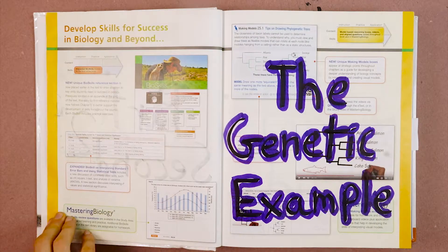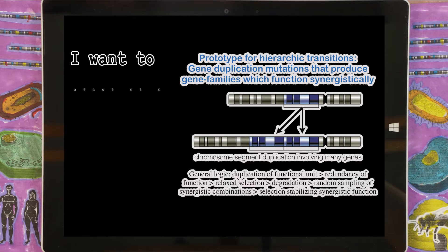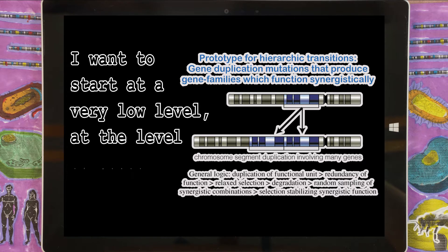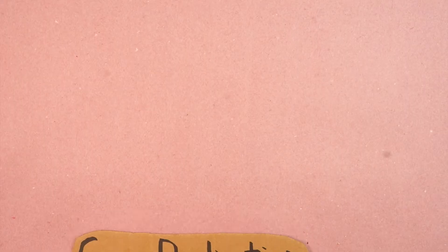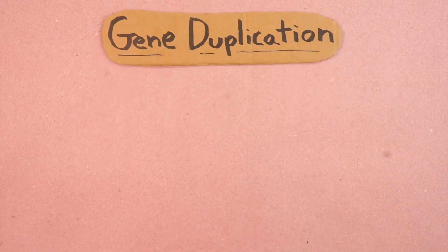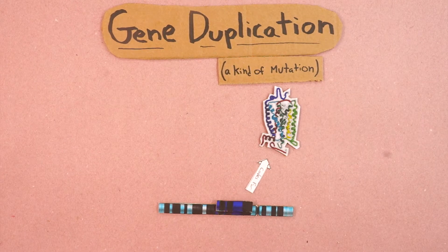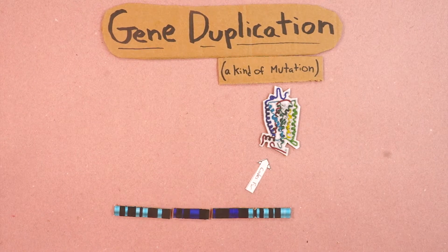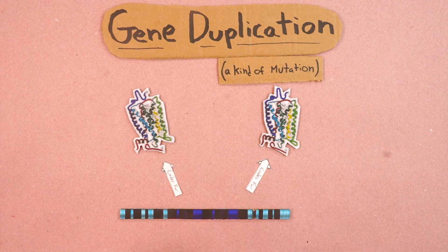Terry has outlined four general phases that these transitions go through. But before we get too abstract, let's look at an example first — the genetic example. There's a fairly common kind of mutation called a gene duplication. The end result is that where there was once one gene on the chromosome coding for a protein, now there's an identical copy right next to it which codes for the same protein.